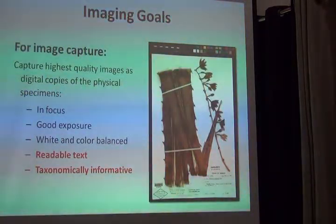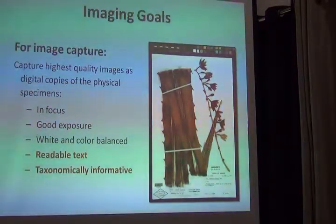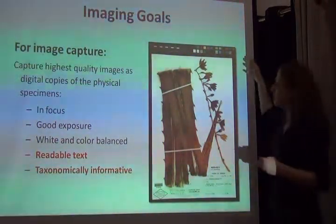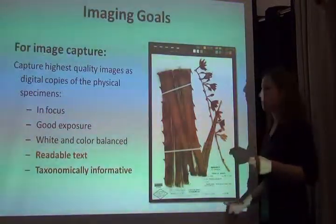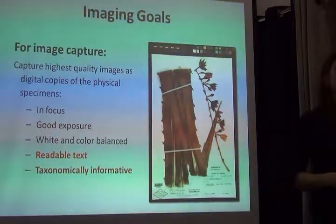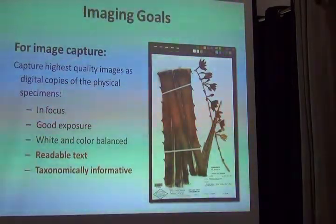We really need to make sure that all of our specimen images have readable text. If we take a picture of our specimen from 10 feet away, it may be in focus, well exposed, and color balanced, but we can't read the label. So we need to optimize the space on our camera sensor to capture the specimen and as much of it as possible and nothing else. We want to eliminate the need to crop, and in so doing, we'll have labels that are readable and hopefully plant parts that are taxonomically informative.